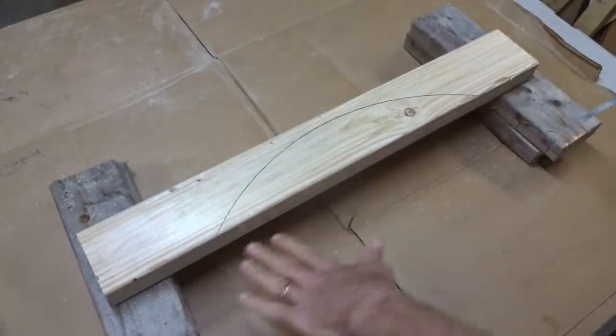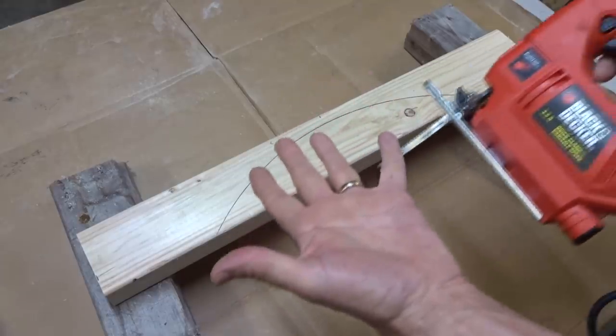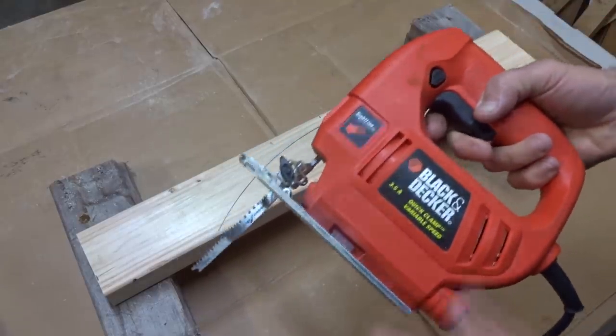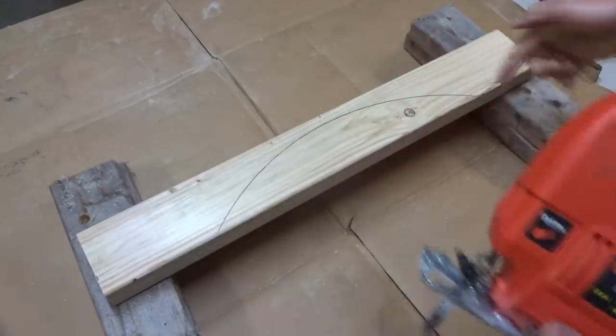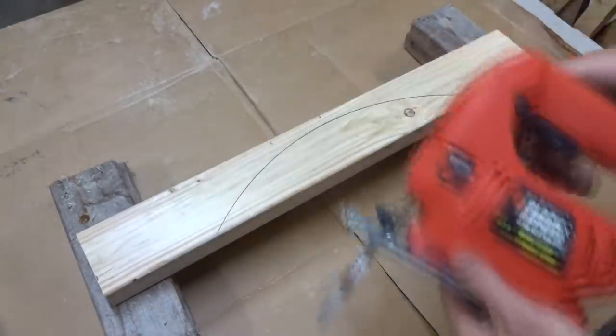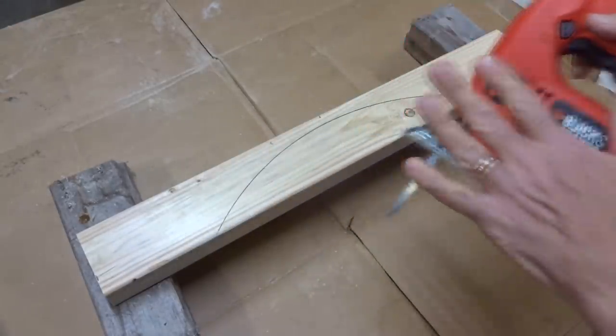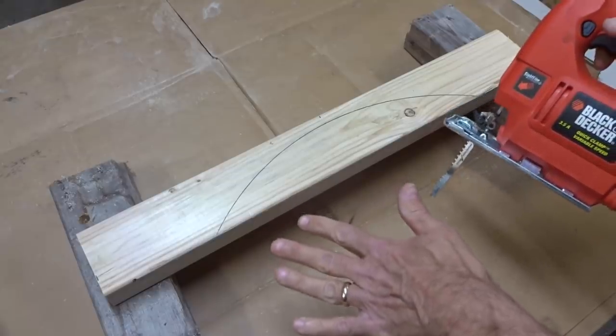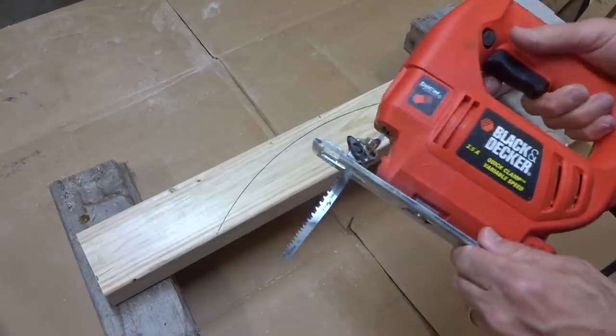Now I placed some boards under each end to kind of lift this up off the table here. And I'm going to be using a jigsaw here to cut this curved line. Now if you don't have a jigsaw, again, you can use a hand saw on there. It's just going to take a while. But I have the jigsaw. That's what I'm going to use.